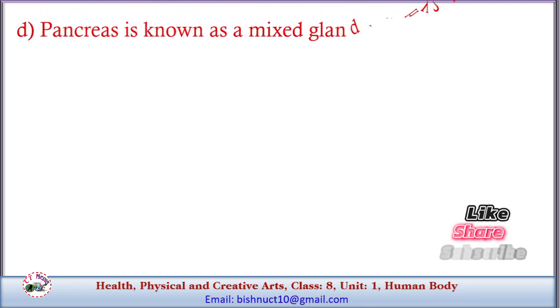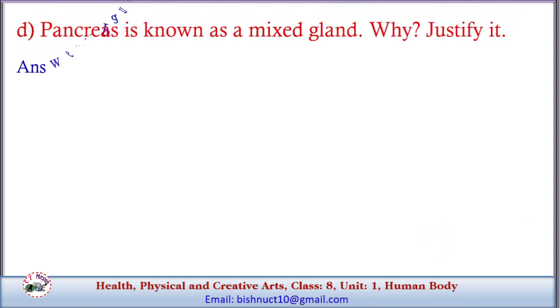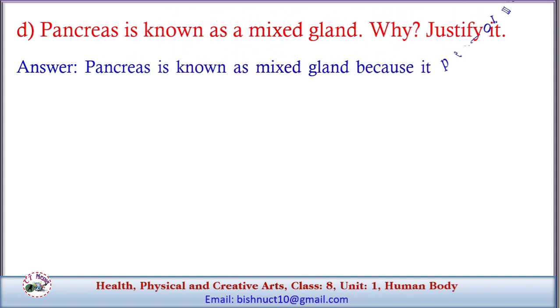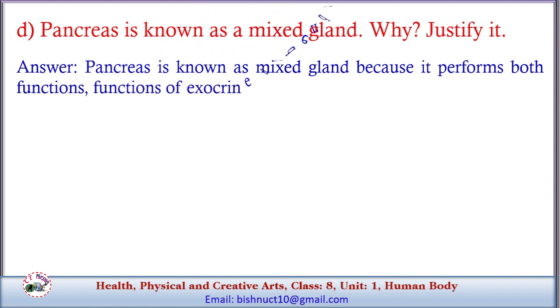D. Pancreas is known as a mixed gland. Why? Justify it. Answer: Pancreas is known as a mixed gland because it performs both functions — the functions of exocrine and endocrine glands.